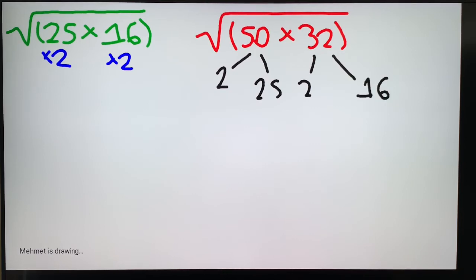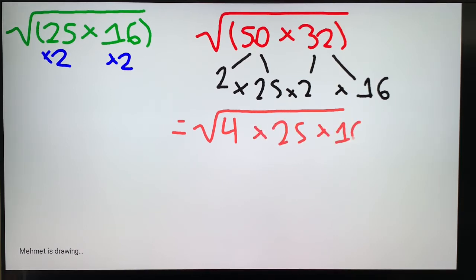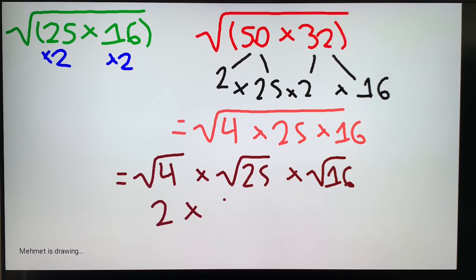And understand that all these numbers are being multiplied to each other, right? So, this is actually equal to root, you bring the 2 and the 2 together to get 4, times 25, times 16. And with that property we were looking at before, we're able to actually break this up into root 4, times root 25, times root 16. And then that is just 2 times 5, times 4, is equal to 40.